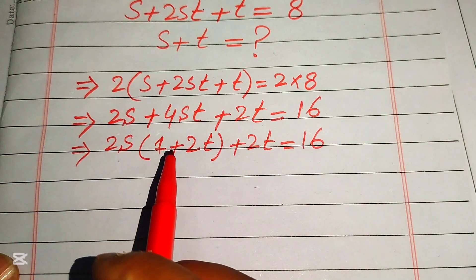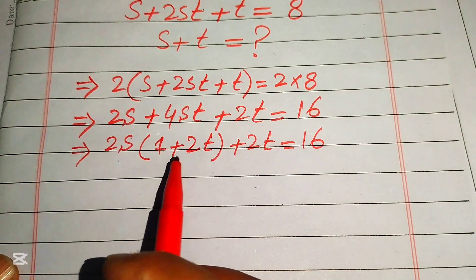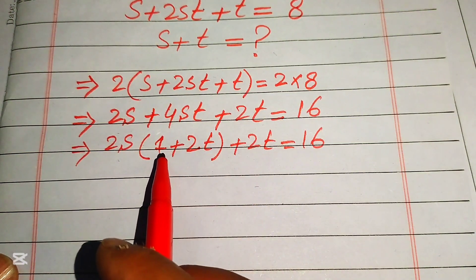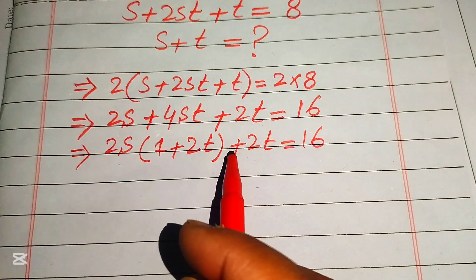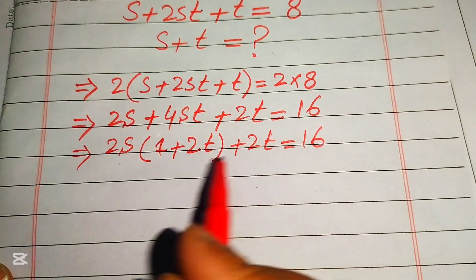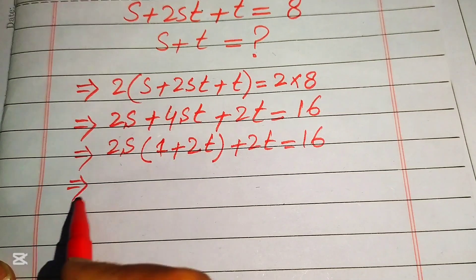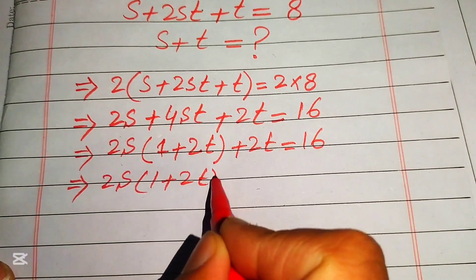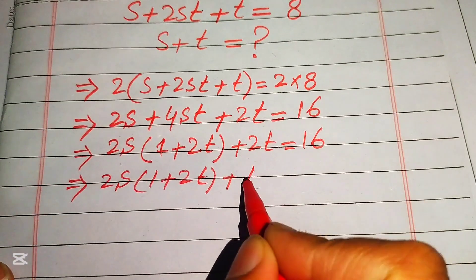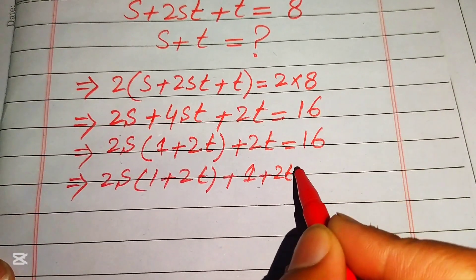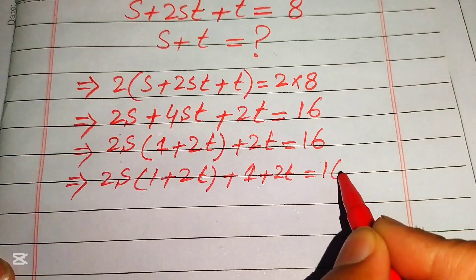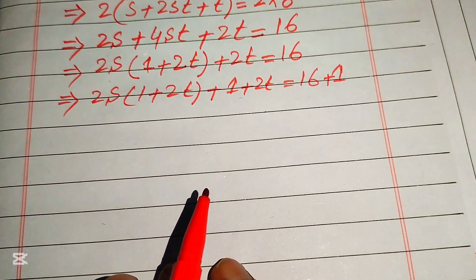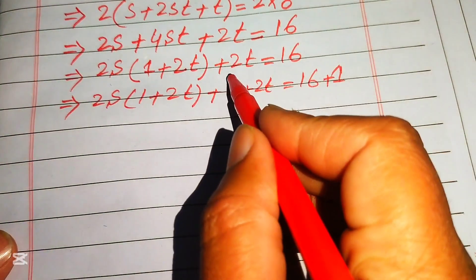We notice that (1 plus 2t) can be a common factor, but we currently only have 2t. To create (1 plus 2t), we add 1 to both sides. This gives us 2s(1 plus 2t) plus (1 plus 2t) equals 16 plus 1, which is 17.